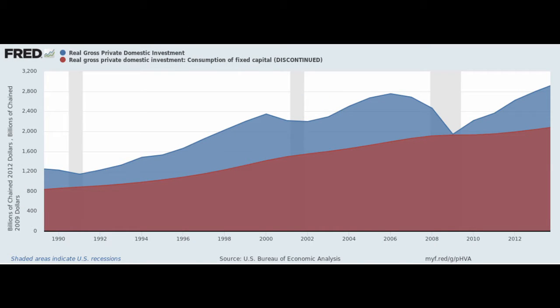The investment in the economy above what's necessary to replace depreciated stock is called net private domestic investment, or NPDI. Both investment to replace consumed capital and net private domestic investment make up gross private domestic investment, or GPDI.